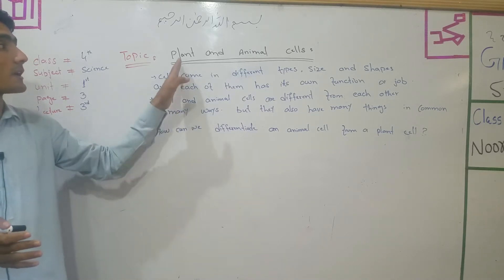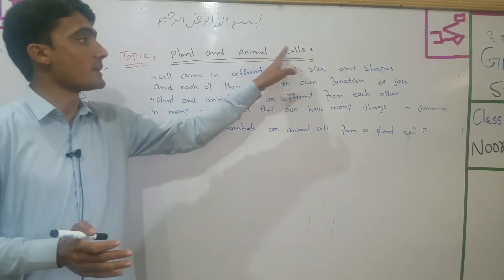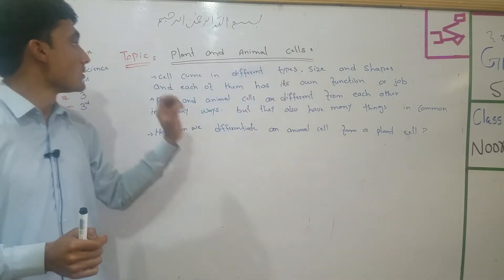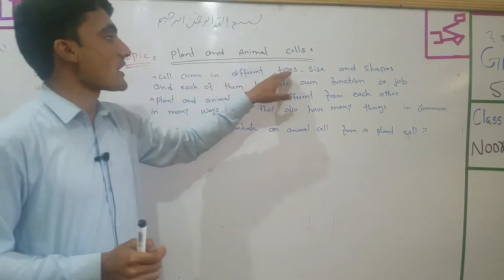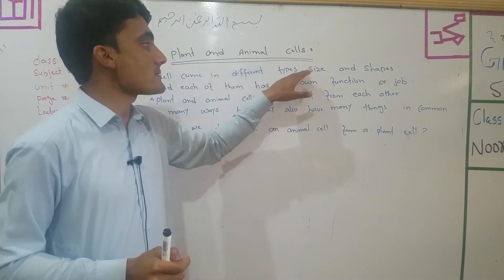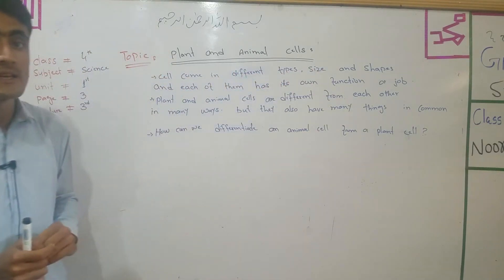The topic is plant and animal cells. Cells come in different types, sizes, and shapes.